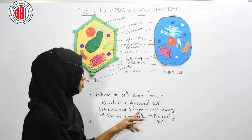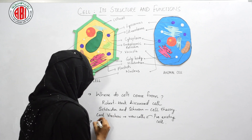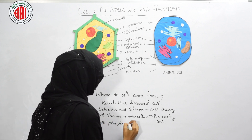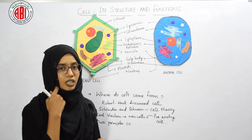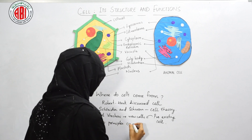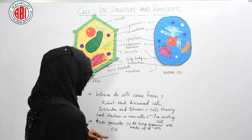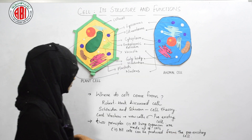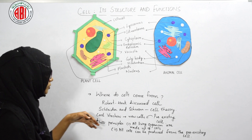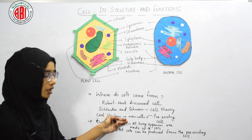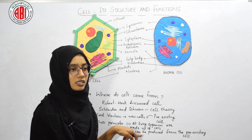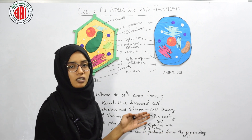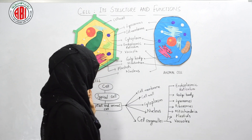Karl Virchow gave the final shape to the cell theory, which rests on two cardinal principles: first, all living organisms are made up of cells and products of cells; and second, all cells can be produced from pre-existing cells — when division of a pre-existing cell occurs, new cells are produced.